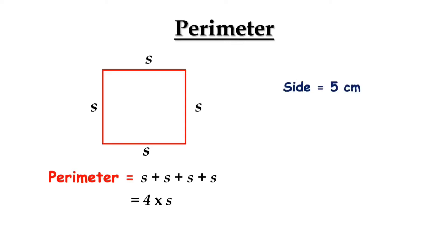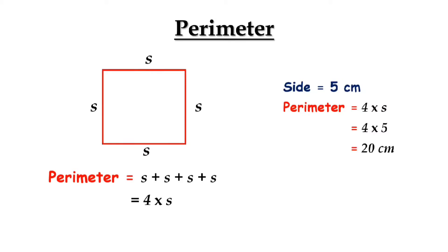Suppose the side of the square is 5 cm. Then what would be its perimeter? Using the formula, perimeter equals 4 times the side, that means 4 times 5 equals 20 cm. So, its perimeter is 20 cm.